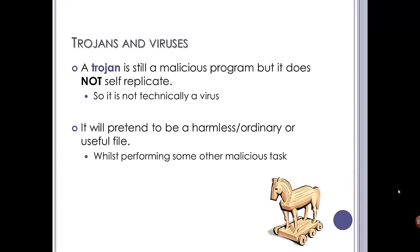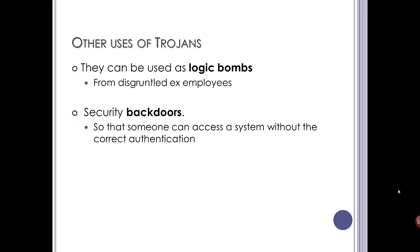A Trojan is still a malicious program but does not self-replicate, so it isn't technically a virus. It pretends to be a harmless or useful file — for example, it might claim to be a virus removal tool, actually remove a virus, but install itself in the process. The name comes from the mythological story where a Trojan horse was left as a gift, soldiers crept out at night, and destruction followed. Trojans can be used as logic bombs that trigger on a particular day or time, and as security backdoors allowing unauthorized access to a system without going through the correct channels.